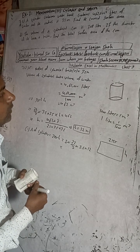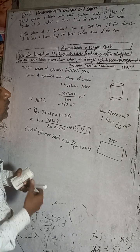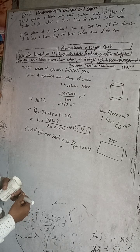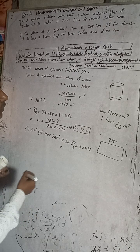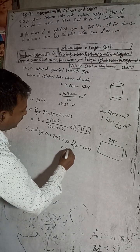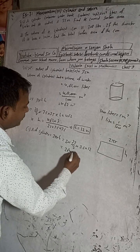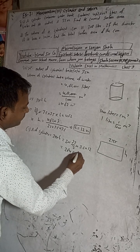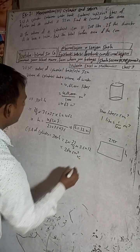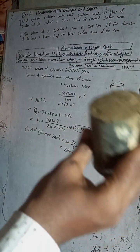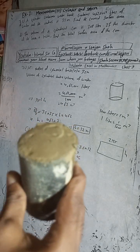The answer is 264. So the curved surface area is 264 square meters. This is the correct solution for question 7C, explained through a simple demonstration.